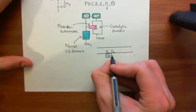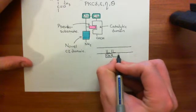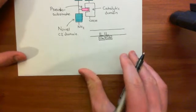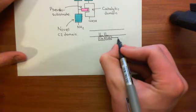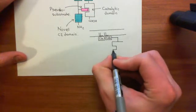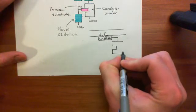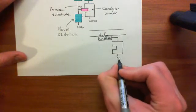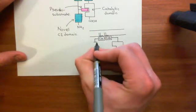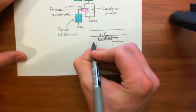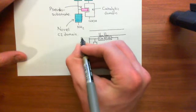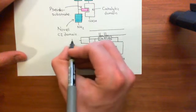The C1A and C1B domains bind to the diacylglycerol molecules — here's C1A and here is C1B. This changes the conformation of the enzyme so that the pseudosubstrate is pulled out of the active site of the catalytic domain. Here is the catalytic domain, the carboxylic acid terminus, and now the pseudosubstrate is sitting nicely away from the catalytic domain and no longer inhibiting it. And here is the novel C2 domain.